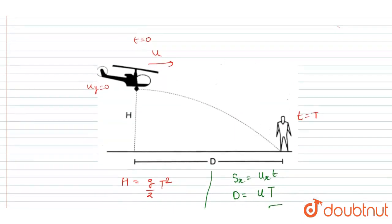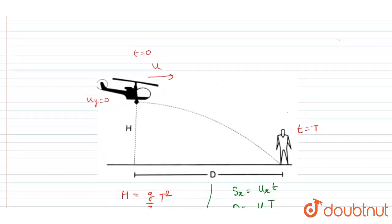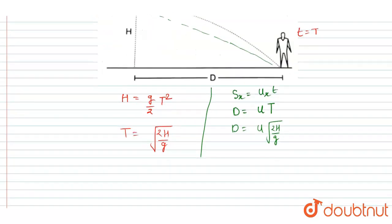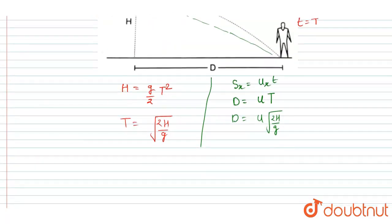Now in the question it is asked that the distance of the helicopter from the victim, so you can calculate that from the Pythagorean theorem. This will be the distance, so that will be under root of h square plus d square.